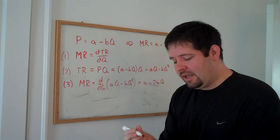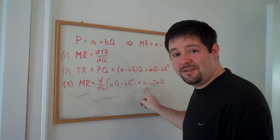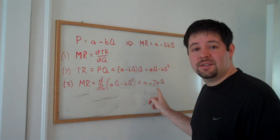So, there you have it. For a linear demand curve, marginal revenue has the same intercept, but twice the slope.